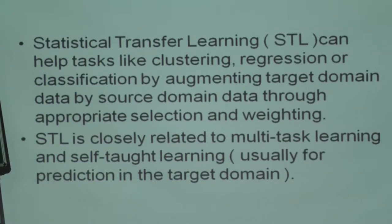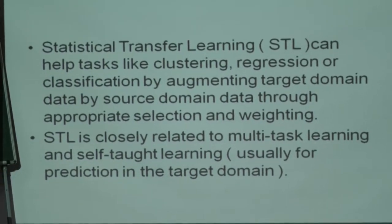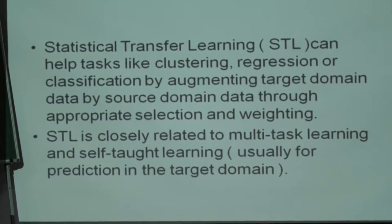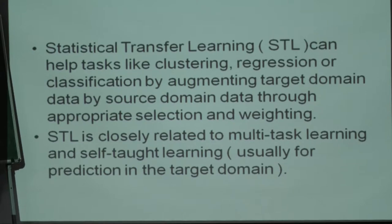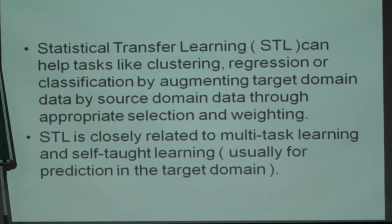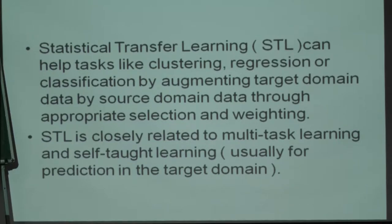Statistical transfer learning can help tasks like clustering, regression, or classification by augmenting the target domain data with source domain data through appropriate selection and weighting. You cannot take the entire data from a source domain to enrich your target domain data - you have to be selective. If there are different domains from which you want to get data, appropriate weights, perhaps in terms of probabilities, may also have to be assigned.